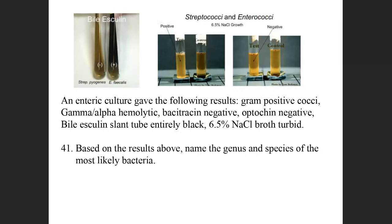An enteric culture gave the following results: gram-positive cocci, gamma or alpha hemolytic, bacitracin negative, optochin negative, bile esculin slant completely black, 6.5 turbid. What's the most likely genus and species of the organism growing in this particular scenario?